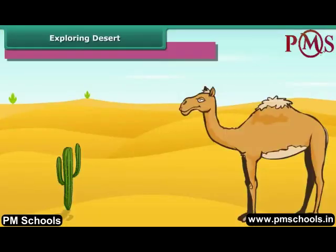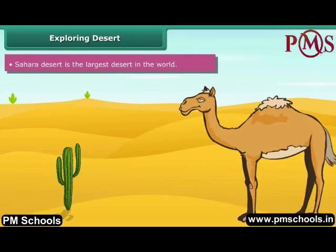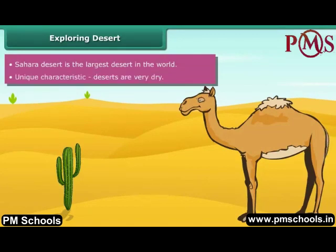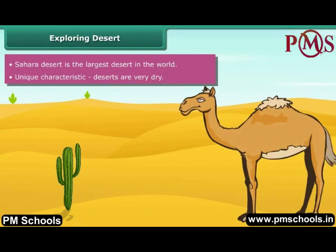Did you know that the Sahara Desert is the largest desert in the world? It is located in Africa. Deserts have a unique characteristic of being dry. They are hot and dry due to a high rate of evaporation and limited rainfall. Plants and animals living in deserts have modified features to survive in such extreme conditions.